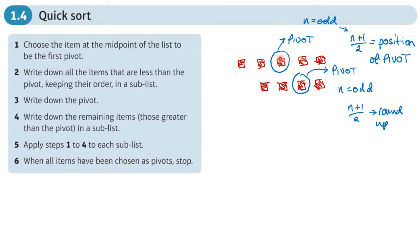Once we've chosen our pivot, some values will be in the wrong place. If we're putting the list in ascending order, we want the smallest values on the left up to the largest on the right. The best way to explain this is with an example.